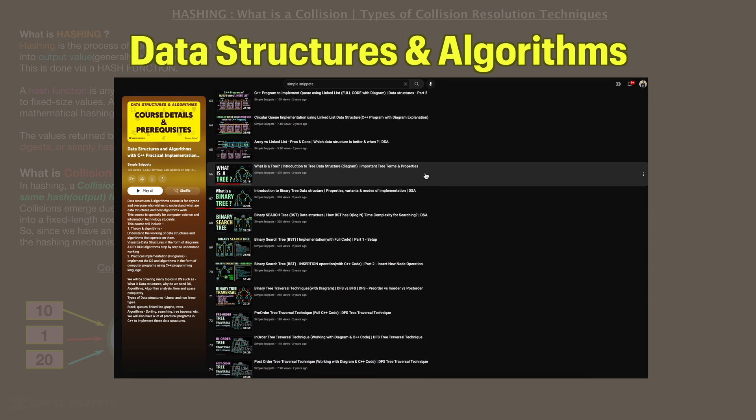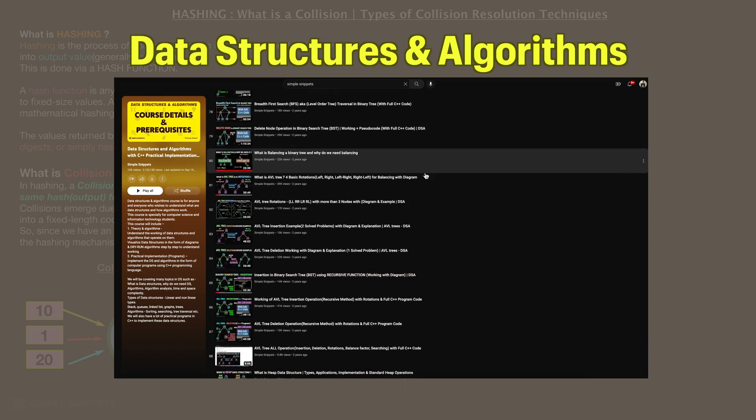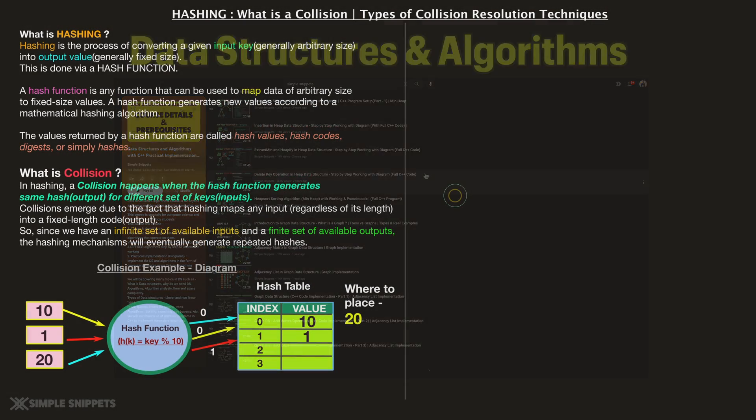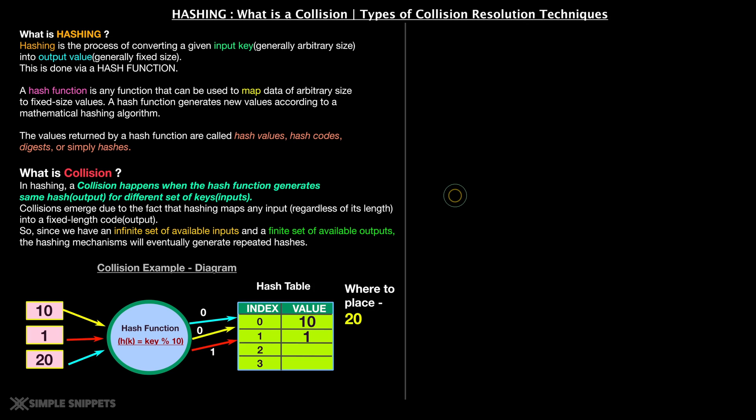We've talked in detail about the introduction to hashing and the entire concept. And after that, we also briefly took an example of what happens when there is a collision and this is what this video is going to be all about. We're going to talk about in detail what is a collision in hashing and understand how it happens as well as what are the different types of collision resolution techniques. This is going to be a short theoretical video.